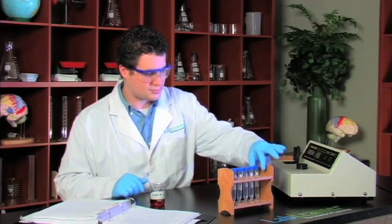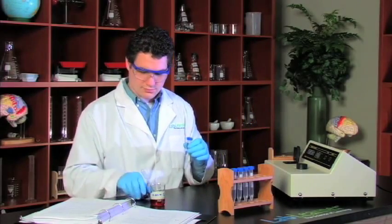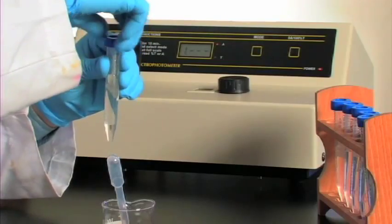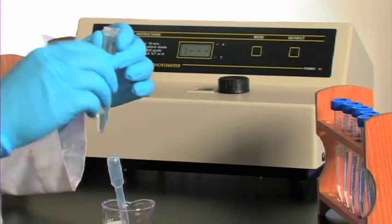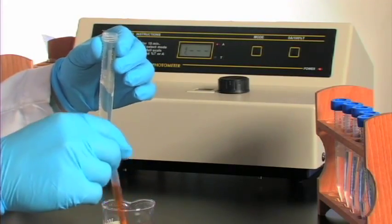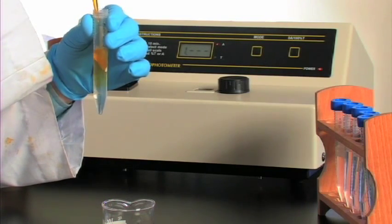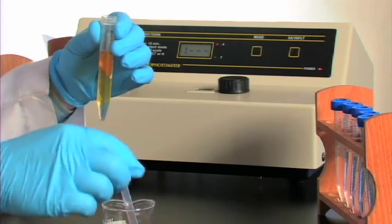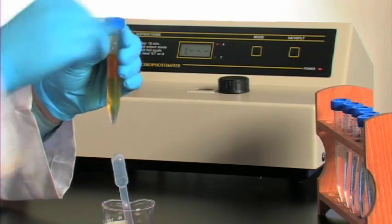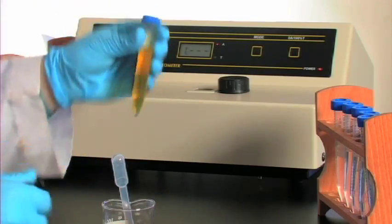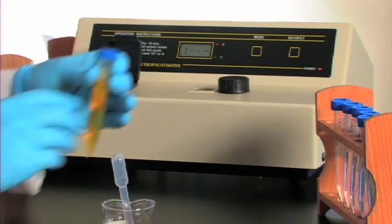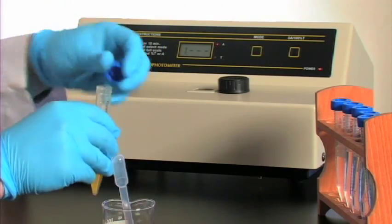Now to initiate the reaction in the first tube, Phil's going to add two milliliters of this iodine solution up to the ten milliliter mark, quickly replace the cap and invert the reaction several times. And as soon as he begins inversion he begins timing the reaction.